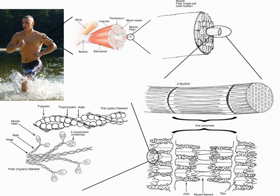Skeletal muscle is arranged in discrete muscles, an example of which is the biceps brachii. The tough, fibrous epimysium of skeletal muscle is both connected to and continuous with the tendons. In turn, the tendons connect to the periosteum layer surrounding the bones, permitting the transfer of force from the muscles to the skeleton. Together, these fibrous layers, along with tendons and ligaments, constitute the deep fascia of the body.